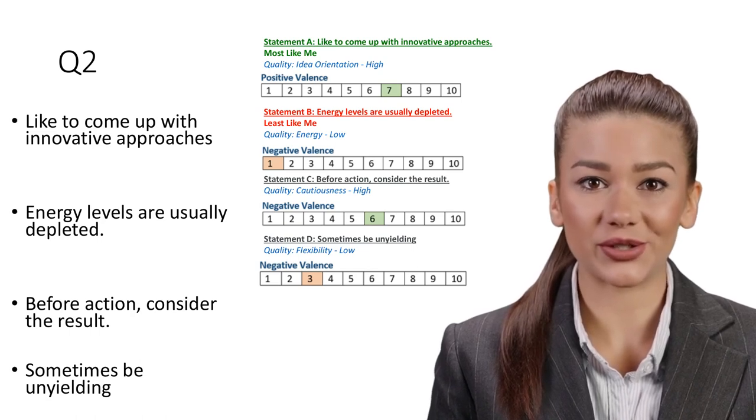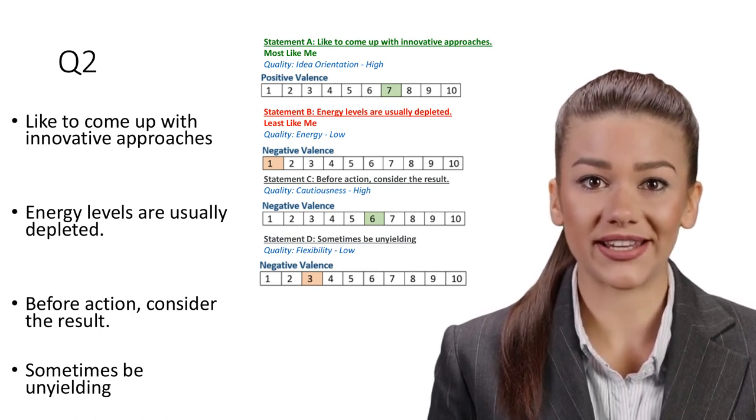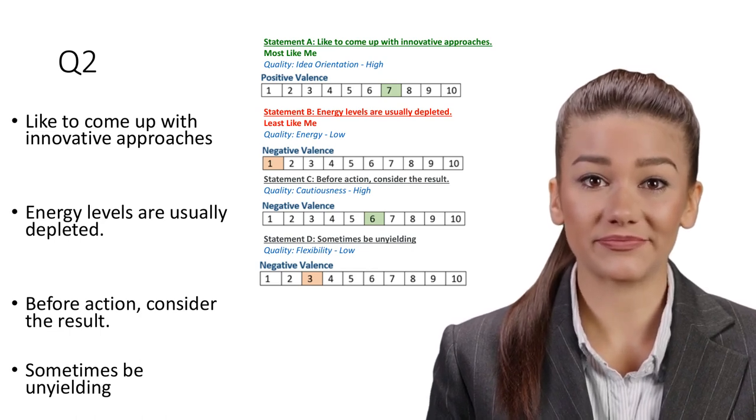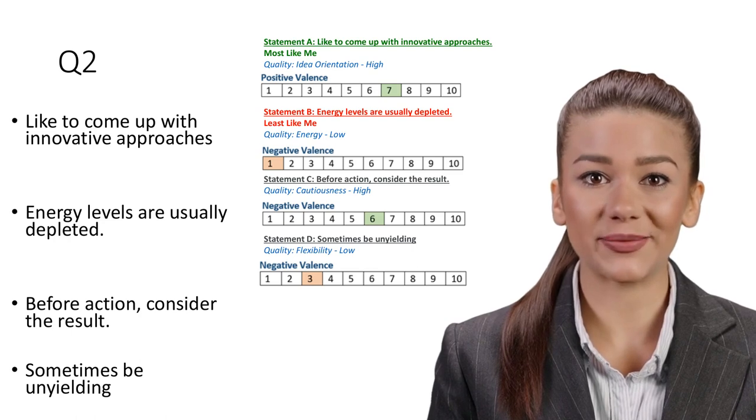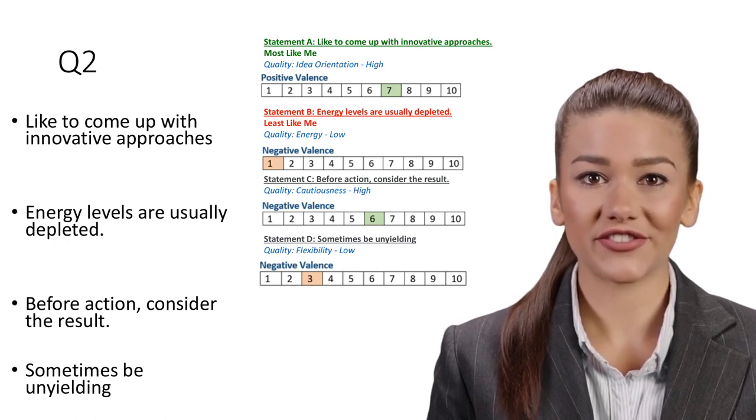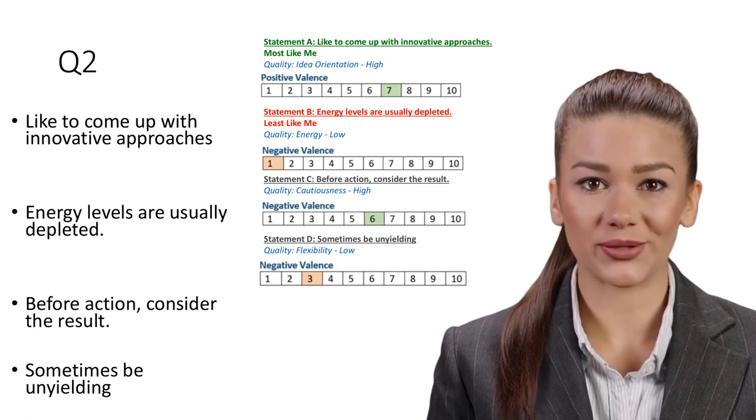Statement B: Energy levels are usually depleted. Least like me. Quality: Energy, Low. Fatigue in the workplace can result in a drop in performance including lower attentiveness, reduced decision-making ability, or lack of focus during complex tasks. This is not a quality a candidate wants to portray.